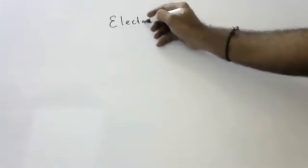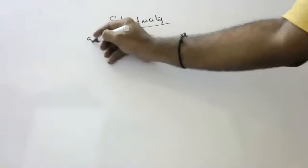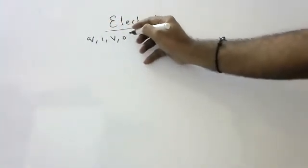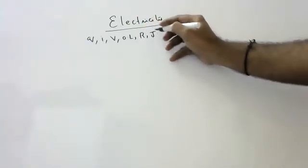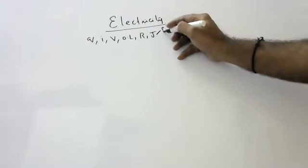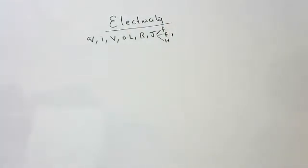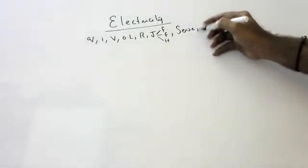Children, coming to electricity — till now in electricity we have discussed about the charge, we have discussed about the current, we have discussed about the potential, we have discussed about Ohm's law, we have discussed about the resistance and also Joule's law of heating. In Joule's law of heating we discussed fuels, filament. Apart from this, I have to discuss resistance in series and resistance in parallel.